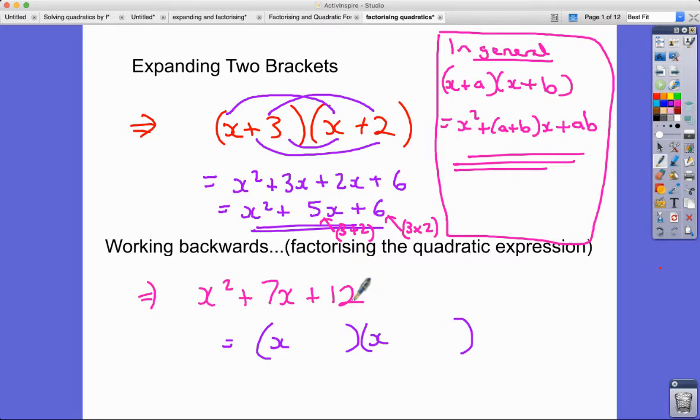...and multiply to give 12? Well, it's got to be 3 and 4, doesn't it? So 3 times 4 gives us the 12 on the end, and for the nose and mouth we get 3x plus 4x when we're doing the smiley face method to get 7x.